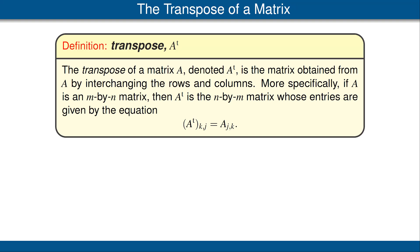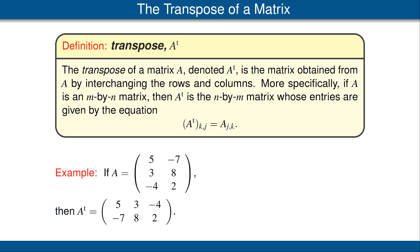We define the transpose of a matrix to be the matrix obtained by interchanging the rows and the columns. For example, suppose A is the matrix shown here — this matrix has three rows and two columns, so it is a three-by-two matrix. We interchange the rows and the columns: what was the first column of A, that's 5, 3, negative 4, becomes the first row of A transpose: 5, 3, negative 4.